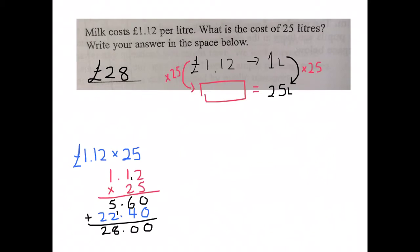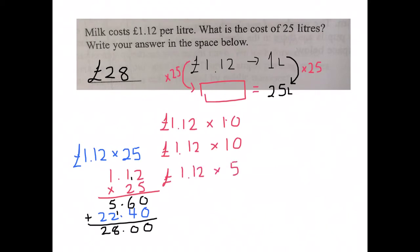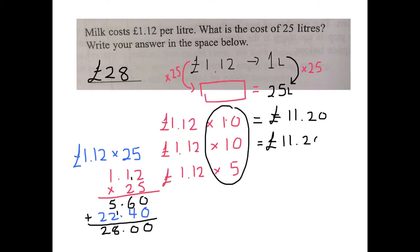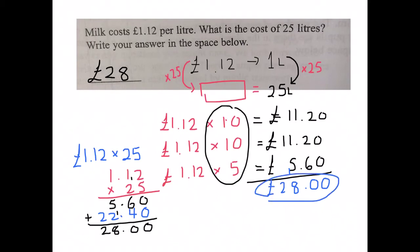An alternative way to multiply by 25: take £1.12 and multiply it by 10, giving £11.20, then multiply £1.12 by 5 — just halve £11.20 — giving £5.60. Our final step is to add the results: three zeros are zero; six, two and two are ten, so zero down one over; five, one, one and one is eight; and one and one is two. So we get the same £28 answer — two different ways to get the same answer.